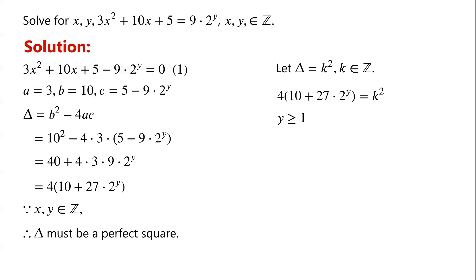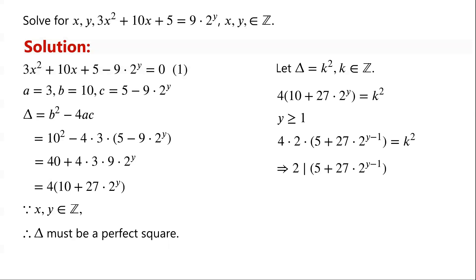Thus y must be greater than or equal to 1. This implies that 10 and 2 to the power of y have a common factor 2, so the left side can be written as 4 times 2 times (5 plus 27 times 2 to the power of y minus 1). This implies 2 divides (5 plus 27 times 2 to the power of y minus 1); otherwise it cannot be a perfect square. As 5 is odd, 27 times 2 to the power of y minus 1 must be odd. If y is greater than 1, then 27 times 2 to the power of y minus 1 is even, so y can only equal 1.